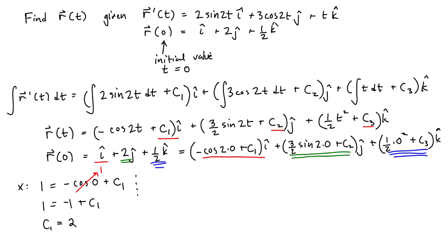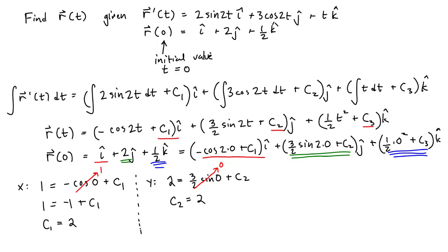Let's find our second constant of integration corresponding to the y component. For the y component, on the left-hand side we have 2, and on the right-hand side we have 3 halves times the sine of 0 plus C2. From trigonometry, the sine of 0 degrees is equal to 0, so this leaves us with C2 equals 2.